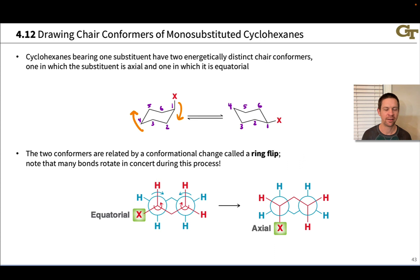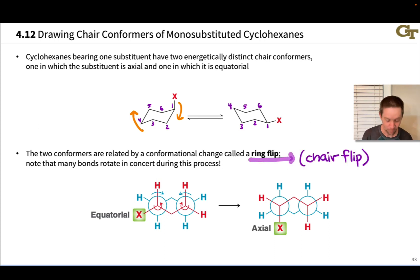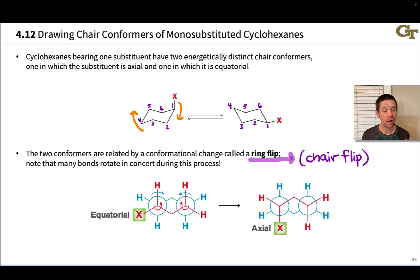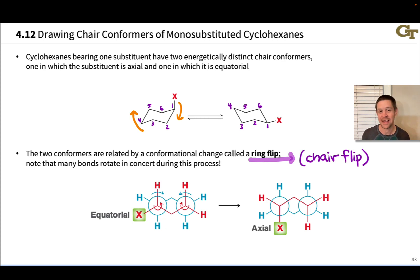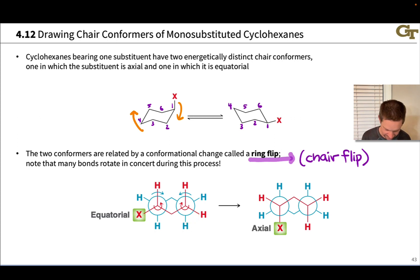This process of flipping the ring is called a ring flip or chair flip, since it flips one chair form into another. It's a conformational change resulting from multiple single bond rotations happening in concert. For example, the X group rotates down into an axial position, while on the other side of the molecule, the H rotates down into an axial position — so multiple bonds are rotating during the cyclohexane chair flip process.